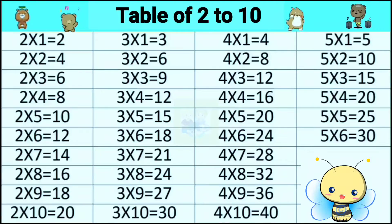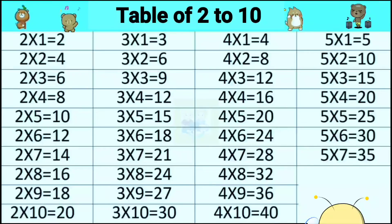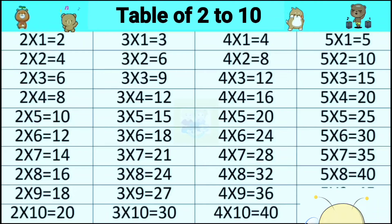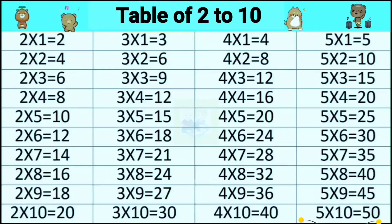Five sixes are thirty, five sevens are thirty-five, five eights are forty, five nines are forty-five, five tens are fifty.